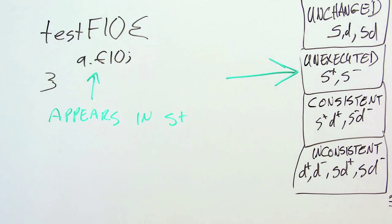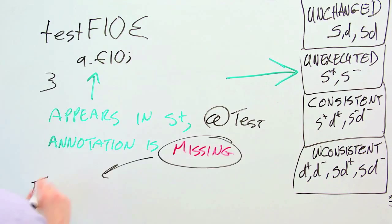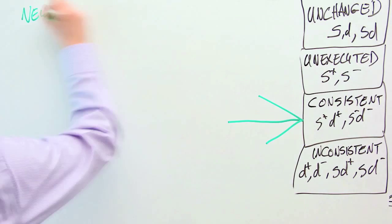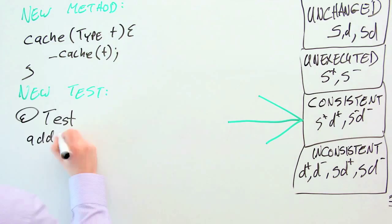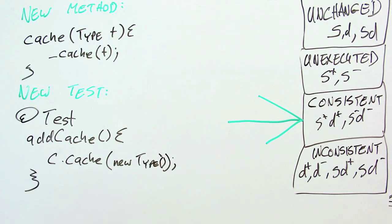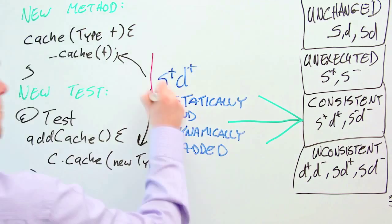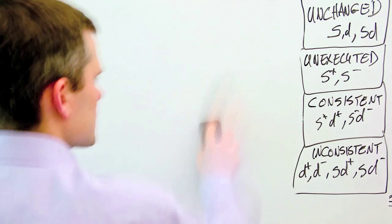The two not executed partitions correspond to changes that were statically made to the system that were not dynamically executed. The two consistent partitions map to changes that were made both statically and dynamically to the system. This is where we expect most changes to occur, as newly added functionality is executed, or newly deleted functionality ceases to execute.